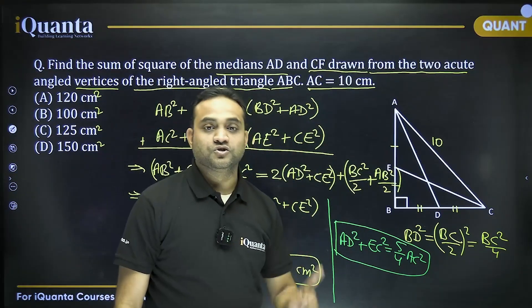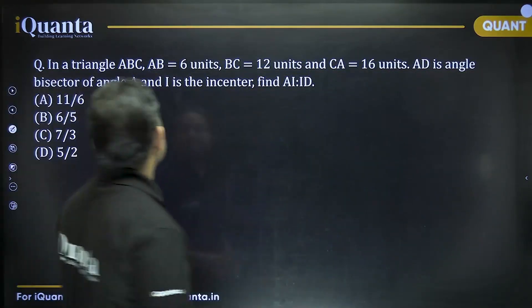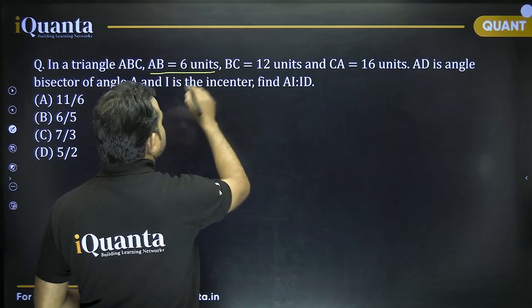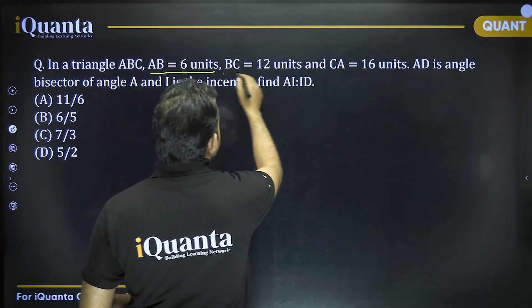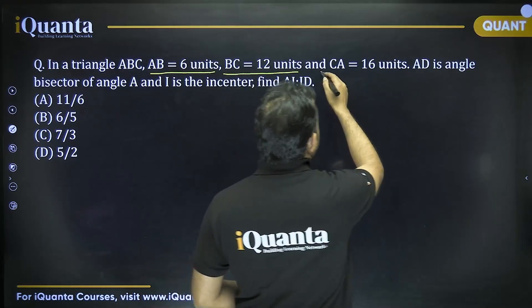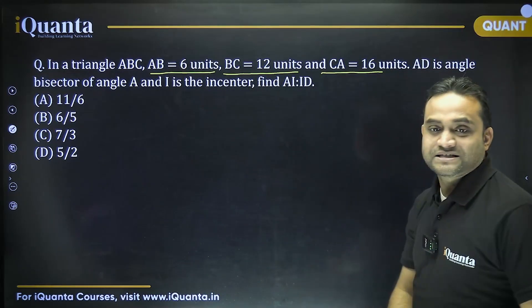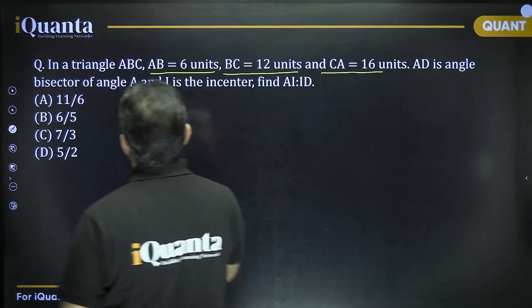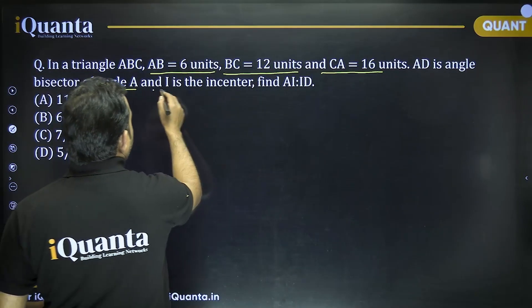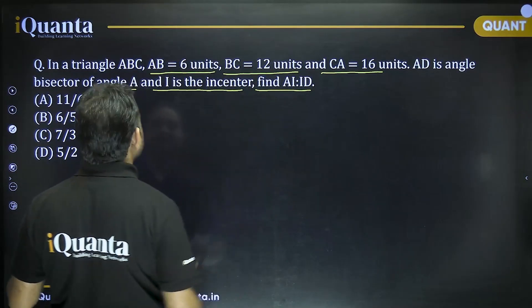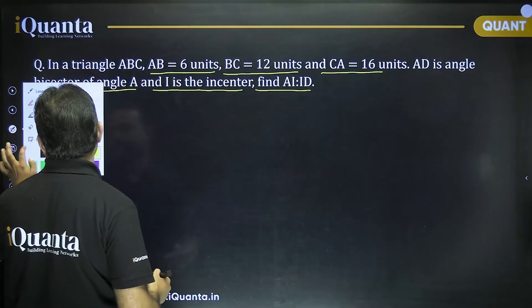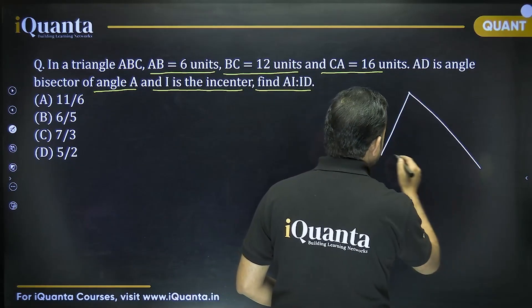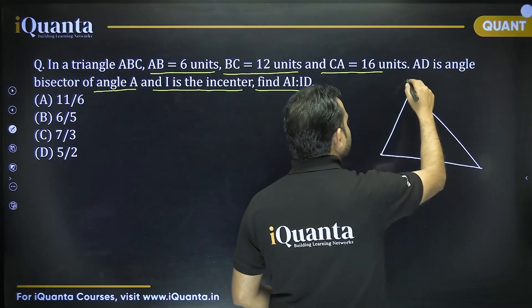Next question: in triangle ABC, AB = 6, BC = 12, CA = 16. AD is the angle bisector of angle A and I is the incenter. Find AI:ID.